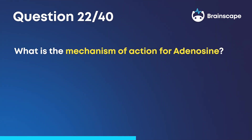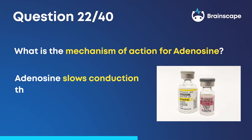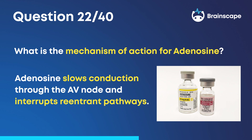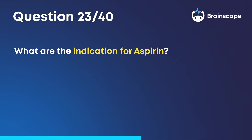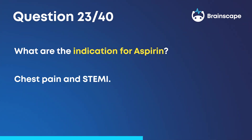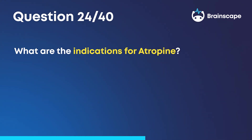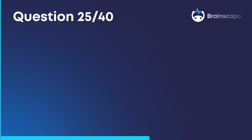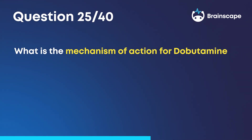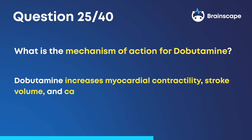Question 22: What is the mechanism of action for adenosine? Adenosine slows conduction through the AV node and interrupts re-entrant pathways. Question 23: What are the indications for aspirin? Chest pain and STEMI. Question 24: What are the indications for atropine? Bradycardia, pediatric rapid-sequence intubation, and organophosphate poisoning. Question 25: What is the mechanism of action for dobutamine? Dobutamine increases myocardial contractility, stroke volume, and cardiac output.